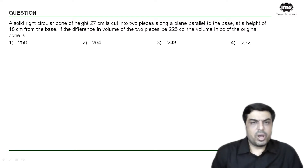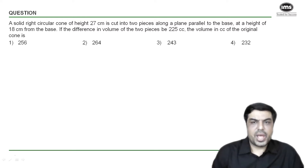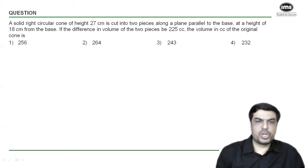We've got a question from mensuration here which says: a solid right circular cone of height 27 centimeters is cut into two pieces along a plane parallel to the base at a height of 18 centimeters from the base. If the difference in volume of the two pieces is 225 cc, what is the volume in cc of the original cone?